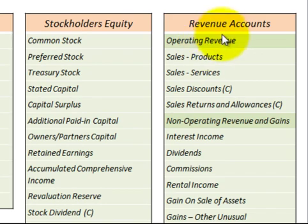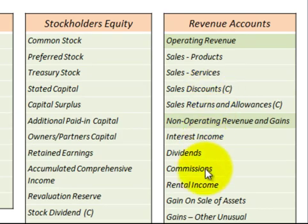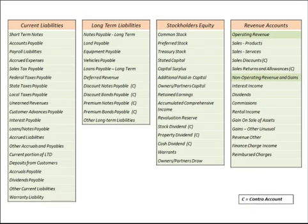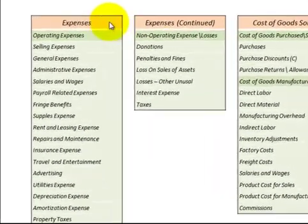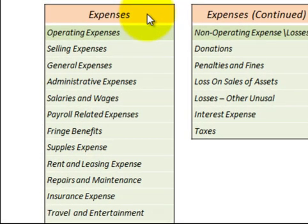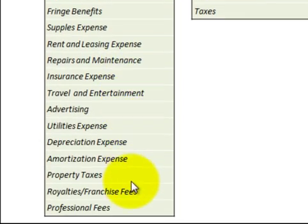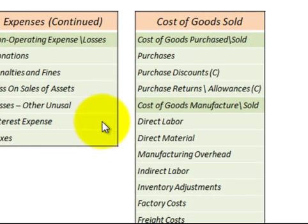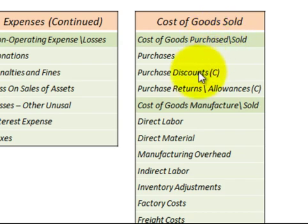Going over to the stockholders equity section and scanning down. Then moving to the revenue accounts — broken down here as well. Under expenses, those are listed. Scanning down further, cost of goods sold includes purchased and manufactured cost of goods sold.